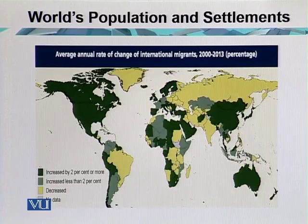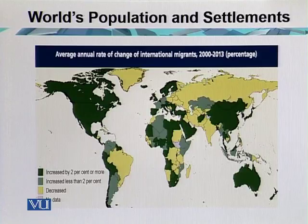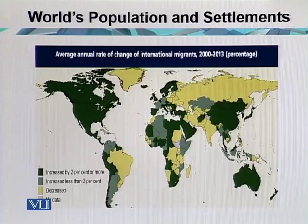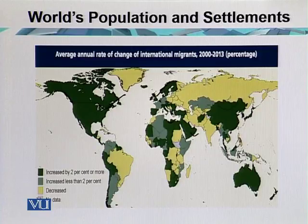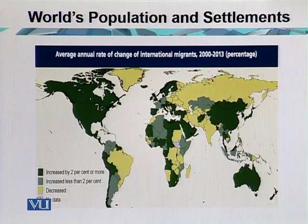Here we have the average annual rate of change of international migration from 2000 to 2030. Areas with an increase of 2% or more are where there are opportunities — such as Australia, Gulf oil-producing nations like Saudi Arabia, Northern Africa, and most countries in Europe and North America. In 2013, the percentage of immigrants reached 2% in these areas. Countries with less than 2% are actually growing or emerging economies.